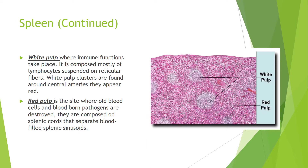White pulp is where immune functions take place. It is composed mostly of lymphocytes suspended on reticular fibers, and white pulp clusters are found around central arteries. Red pulp is a site where old blood cells and blood-borne pathogens are destroyed. Red pulp is composed of splenic cords that separate blood-filled splenic sinusoids.